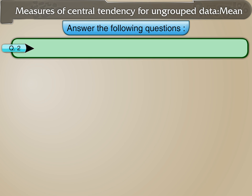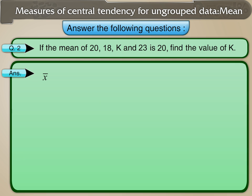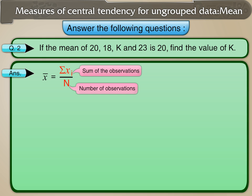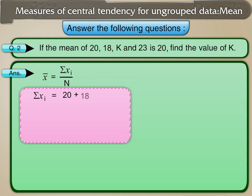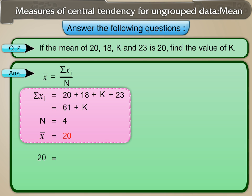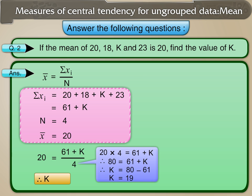Question 2: If the mean of 20, 18, k, and 23 is 20, find the value of k. Mean equals sigma xi upon n. Sigma xi equals 20 plus 18 plus k plus 23, which equals 61 plus k. n equals 4, and the mean is given to be 20. Substituting, we get 20 equals (61 plus k) upon 4. Simplifying, we get k equals 19.